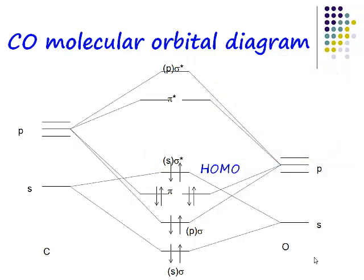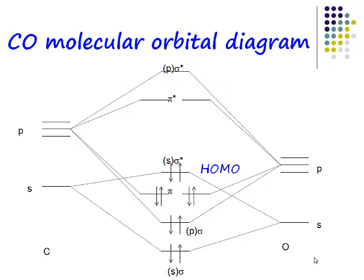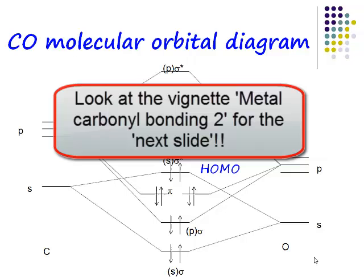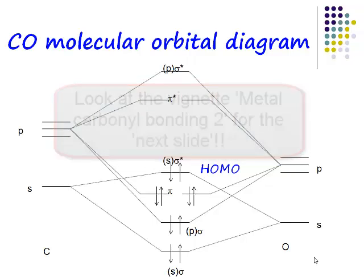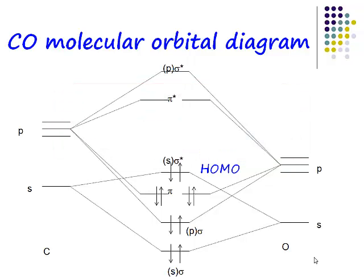If this is the HOMO, what do we call these two degenerate orbitals? They are the LUMOs — the lowest unoccupied molecular orbitals — and they have pi-star character. On the next slide, we've drawn the lone pair on the carbon and also the pi-star orbitals. These pi-star orbitals have some interesting properties.